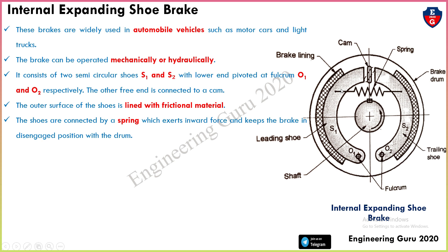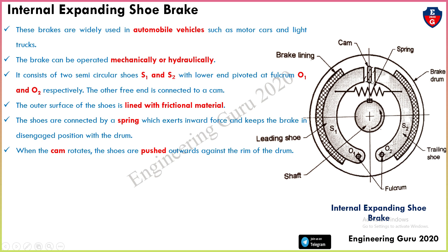The shoes are connected by a spring which exerts an inward force to keep the brake in the disengaged position with the drum. When the cam rotates, the shoes are pushed outward against the rim of the drum. The friction between the shoe and drum produces the braking torque.